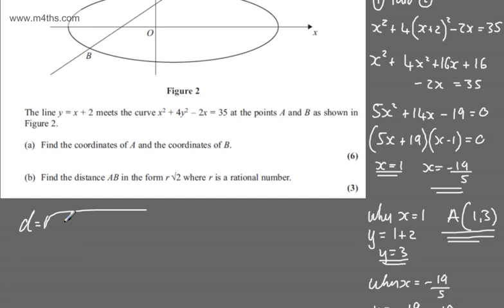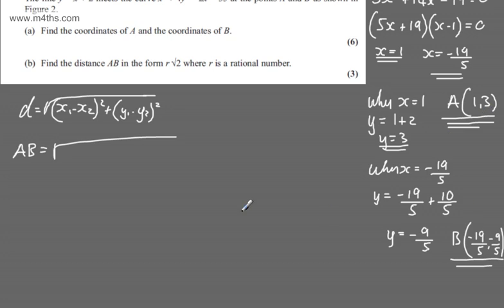The distance formula is going to be the square root of x1 minus x2 squared, and then we're going to have plus y1 minus y2 squared. So what we can say then is that AB will be equal to the square root. Now if we consider, we've got 1, 3, and we've got minus 19 over 5, comma 9 over 5. So I'm going to have now x1, which is going to be 1, minus now the minus 19 over 5, and we need to square this. I'm then going to add to that the 3 minus the minus 9 over 5, which we need to square.